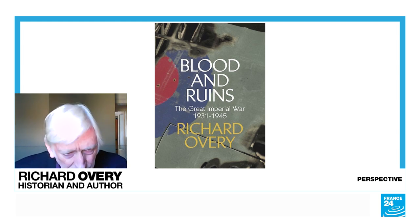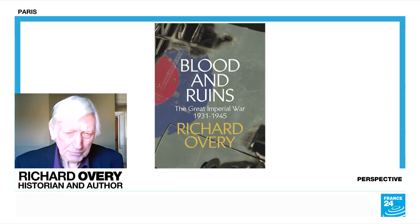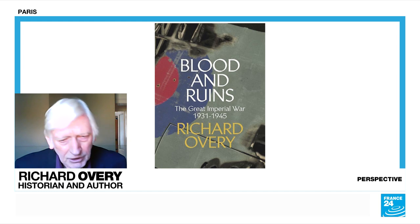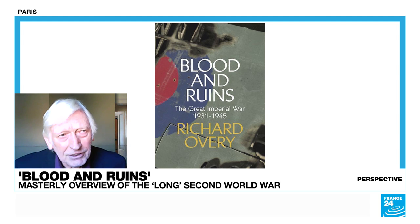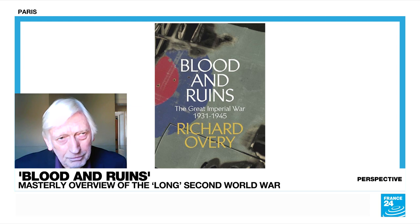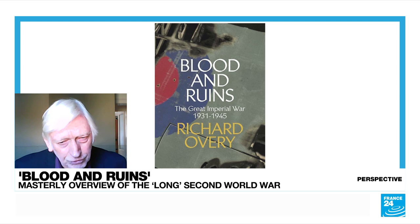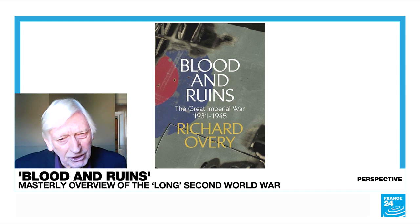The title of your book is Blood and Ruins — where did you get that title? I got it from the political scientist Leonard Woolf, the husband of Virginia Woolf, who wrote a book about imperialism in 1928. He asked: is it going to go away peacefully, or is it going to end in blood and ruins? It seemed to me a very appropriate quotation. Woolf believed it would be blood and ruins, and Woolf was right. The end of empire was an extraordinary, messy, bloody experience — and it was a global experience.